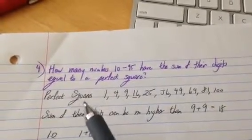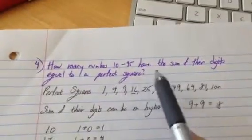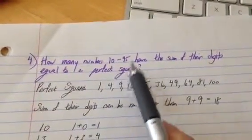And then you could move on to 11. 1 plus 1 is 2. Oh, that's not a perfect square. You could do that. It would take a little long, though.